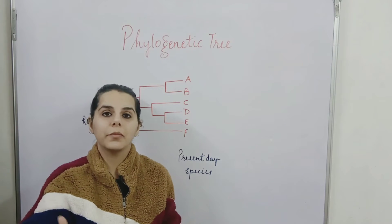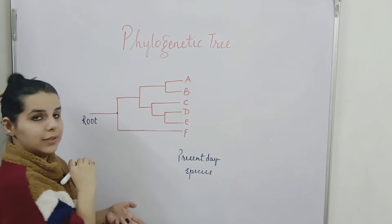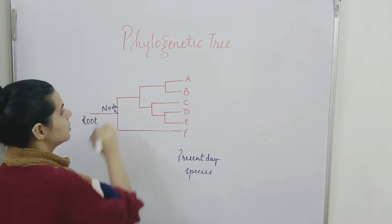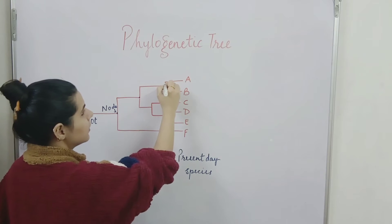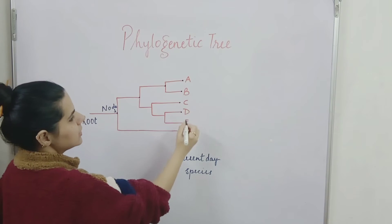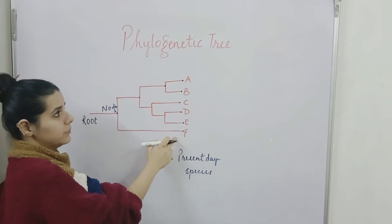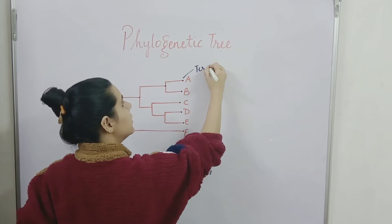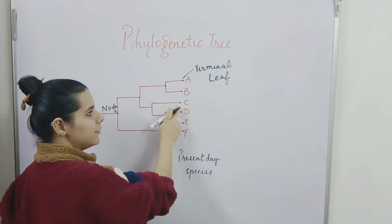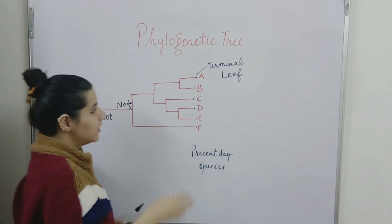This is the root, and this is a branch point. The branch point is known as a node. We have this node, this node, and this node, and then we have points A, B, C, D, E, and F. Because A through F are at the terminal points of the phylogenetic tree, these are known as terminal nodes, and they are referred to as leaves — leaf A, leaf B, and so on.